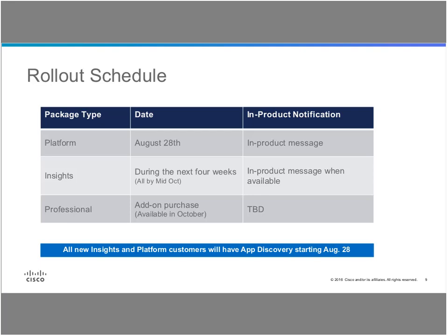For Professional package customers, this will be an add-on purchase, orderable in October. Those are the three main package types. If you are an Insight customer and need access now, you can contact your sales team and we can work to get it to you as soon as possible. It will be available to all Insight customers within the next few weeks.